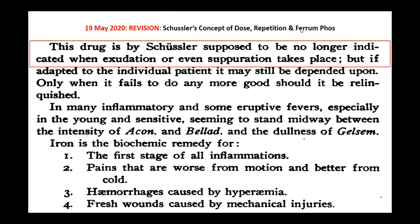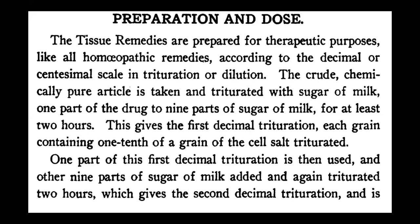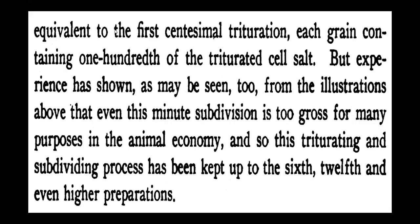Today we will go ahead with a short aspect of theory and then learn Kali Muriaticum. On preparation and dose: tissue remedies are prepared for therapeutic purposes like all homeopathic remedies, according to the decimal scale in trituration or digestion. The crude chemically pure article is taken and triturated with sugar of milk — one part of drug to nine parts of sugar of milk for at least two hours. This gives the first decimal trituration.